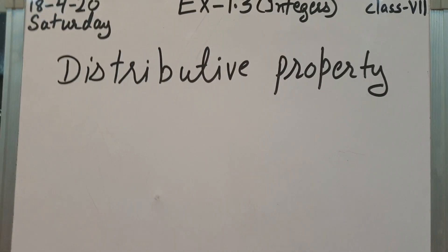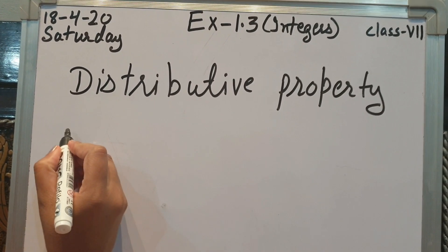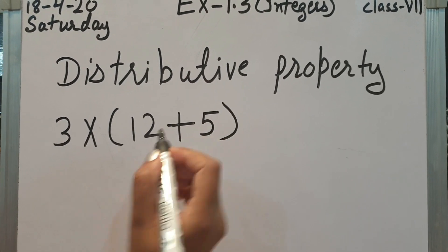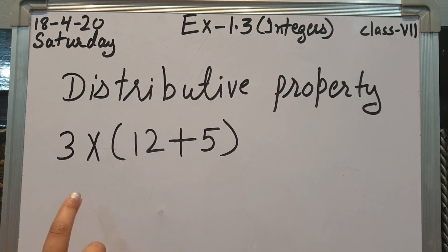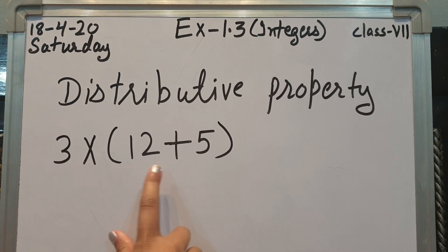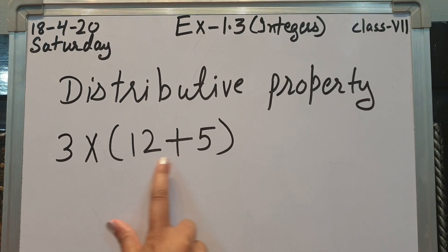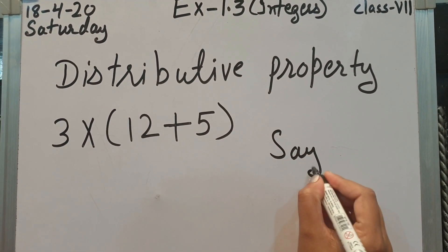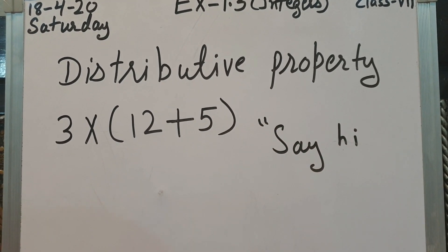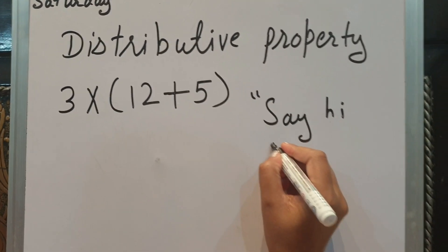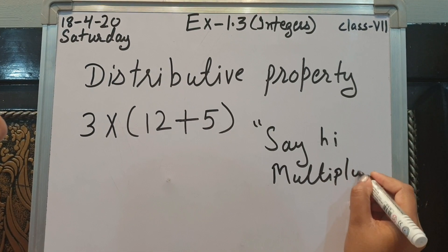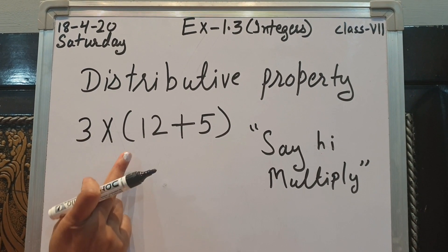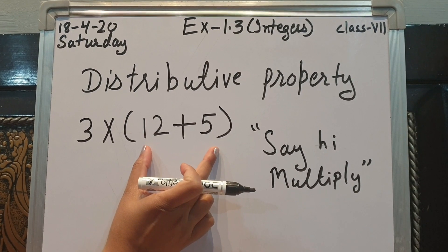So it should be easily understood by you. Now see, I am taking this example: 3 times the sum of 12 and 5. In this question, it says 3 times the sum of 12 and 5. How will we solve it? This is just for understanding. We will use 'say hi' to multiply. This 3 is outside the home — you can say the bracket is your home and 3 is your guest.